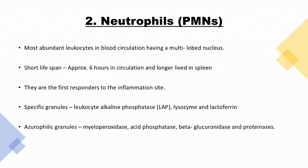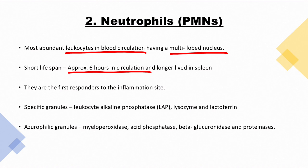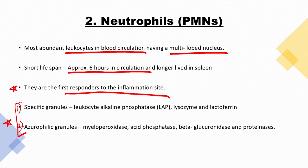Neutrophils, also known as PMNs or polymorphonuclear leukocytes, are the most abundant leukocytes in blood circulation. They have a multi-lobed nucleus and a short lifespan of approximately six hours in circulation. They are the first responders to the inflammation site — a very high yield point for Step boards. Neutrophils possess two types of granules: specific granules and azurophilic granules. Specific granules consist of leukocyte alkaline phosphatase (LAP), lysozyme, and lactoferrin.